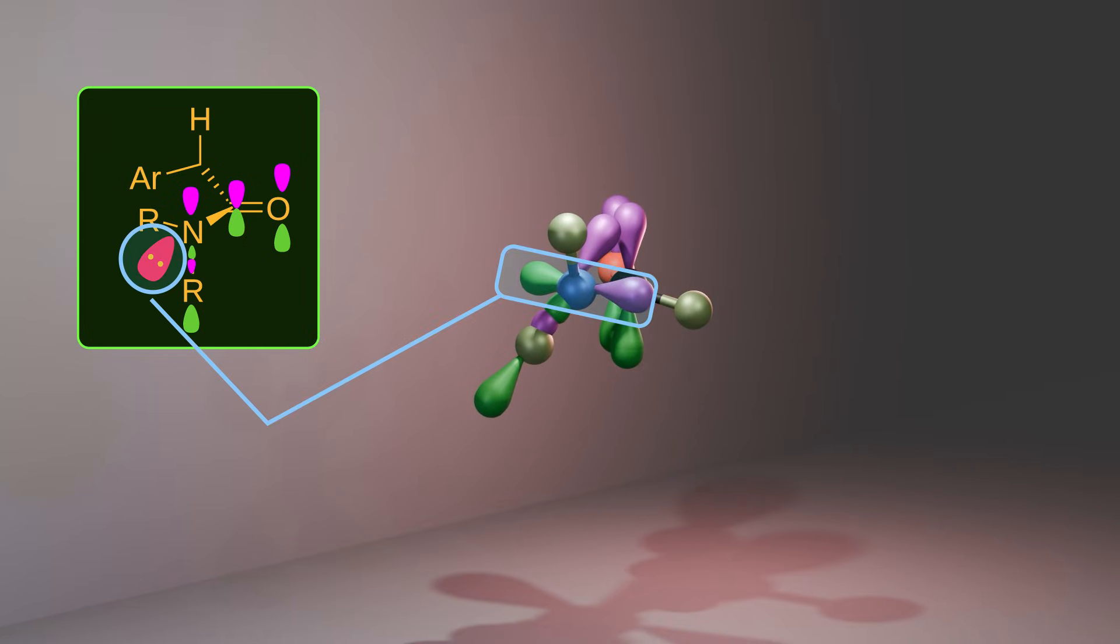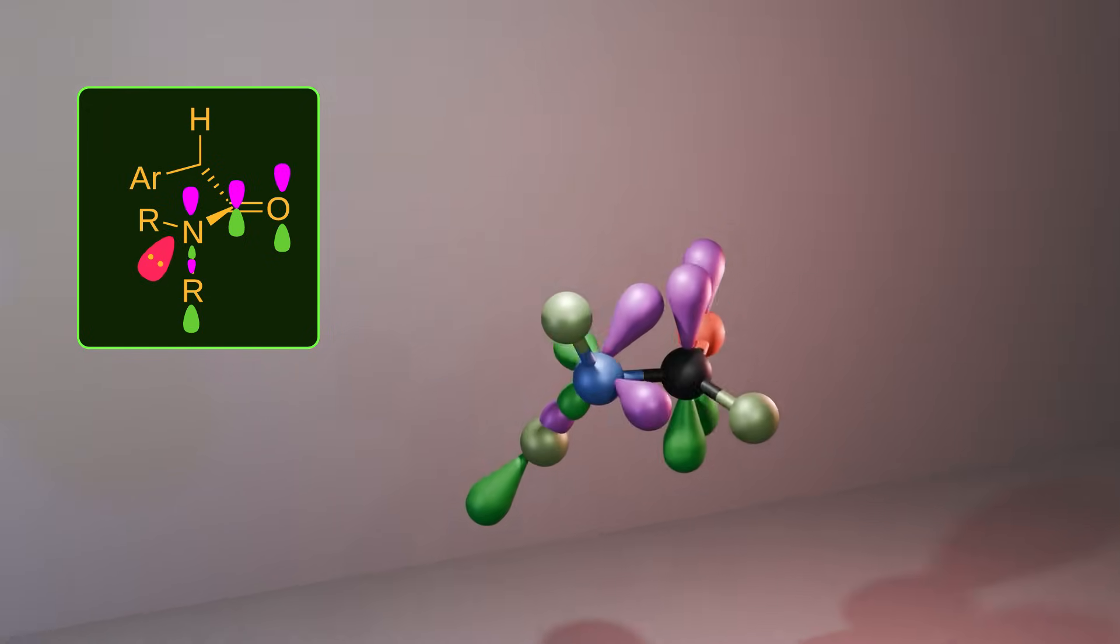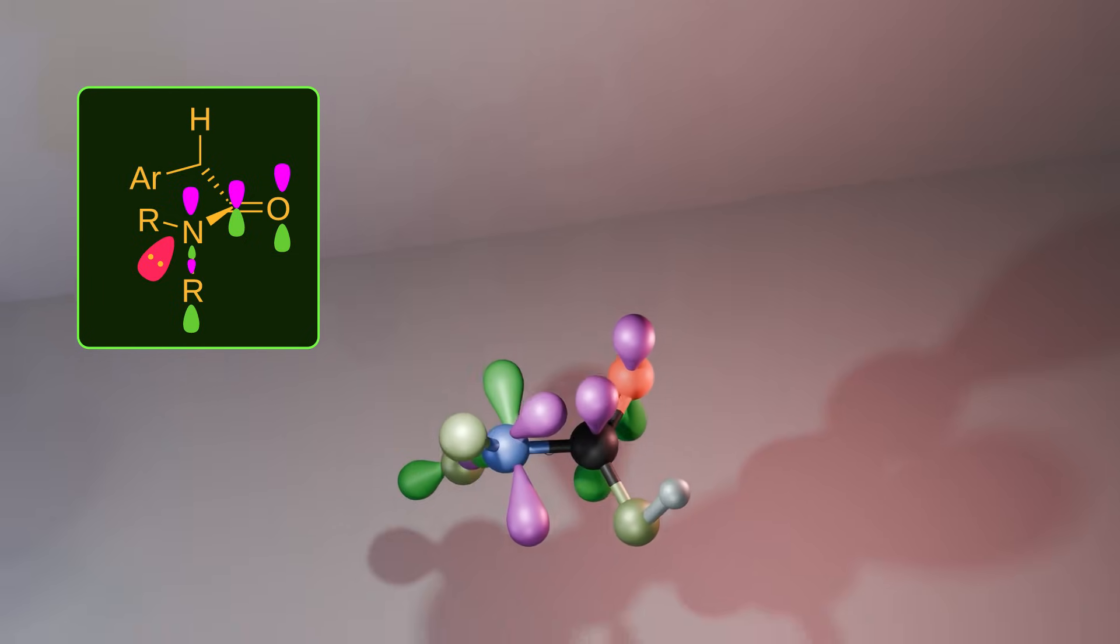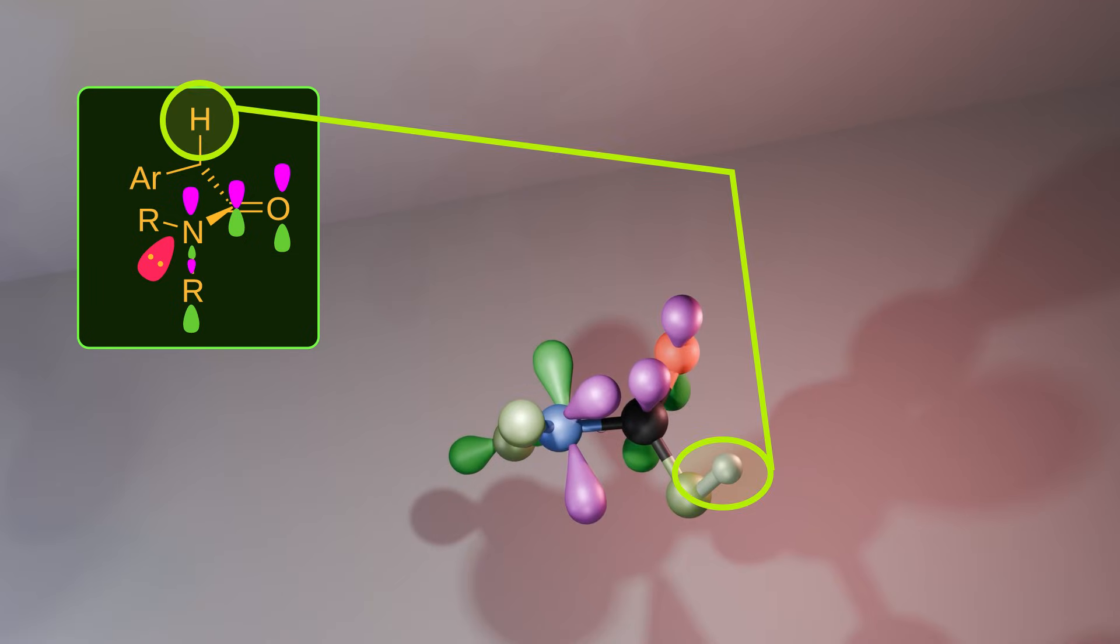This new interaction has a few consequences. First, the non-bonding electrons of the nitrogen are more accessible because they are no longer involved in the resonance. In other words, in this conformation, the nitrogen atom is more basic. Second, the carbonyl group becomes more electrophilic because its pi electrons are partially depleted as they move into the empty carbon-nitrogen anti-bonding orbital. Third, the alpha-hydrogens become more acidic also because electron density is pulled away from the carbonyl group.